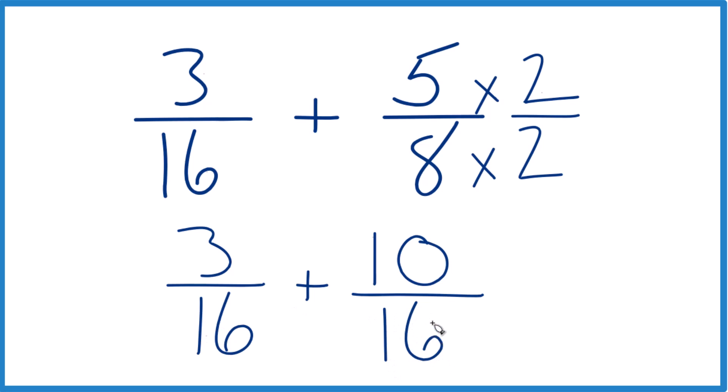Now we have the same denominator, and 10 sixteenths, that's equivalent to 5 eighths, same value. So we just add these up, 3 plus 10 is 13, and keep the denominator the same, 16.